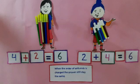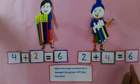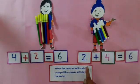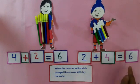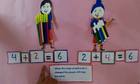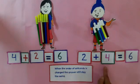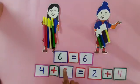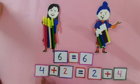Children, here we see that Minnie is having six pens and Binny is also having six pens. So, when the order of the number is changed, the answer remains same. Here, 4 plus 2 is equal to 6, and 2 plus 4 is equal to 6. Hey children, 6 is equal to 6. So we can say 4 plus 2 is also equal to 2 plus 4.